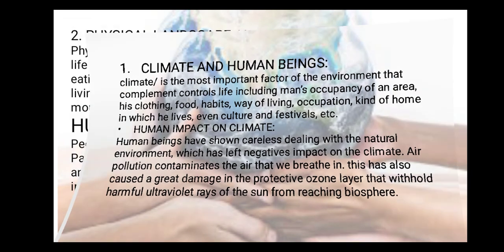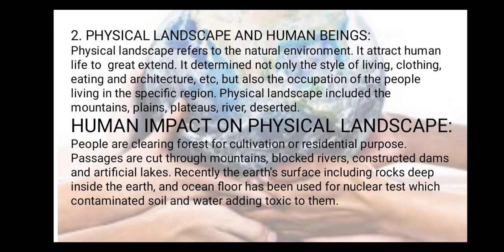Number two: physical landscape and human beings. Physical landscape refers to the natural environment. It attracts and influences human life to a great extent. It determines not only the style of living, clothing, eating, and architecture, but also the occupation of the people living in a particular region. Physical landscape includes mountains, plains, flatlands, rivers, and deserts.